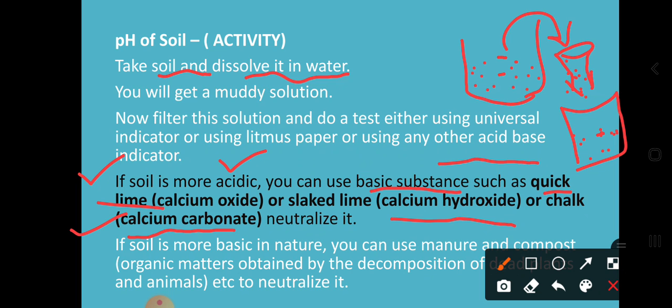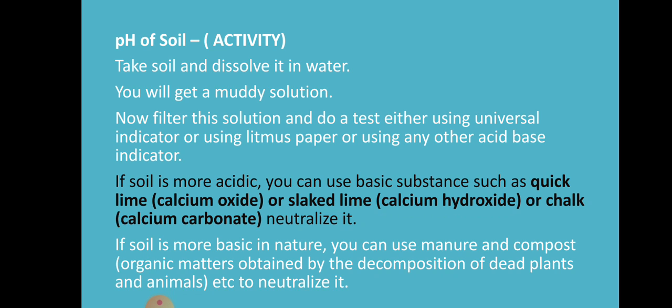If the soil is more basic in nature, then you can add manure and fertilizers. Why? Because they are composed of organic matter obtained by decomposition of dead plants and animals, which helps to neutralize the basic soil. So if you find the soil is more basic, you add manure and fertilizer to maintain the pH range. Keep in mind: for neutralizing acidic soil, we use quicklime or slaked lime.